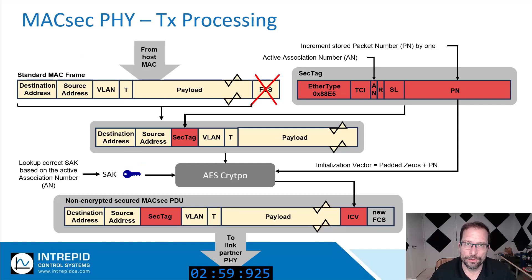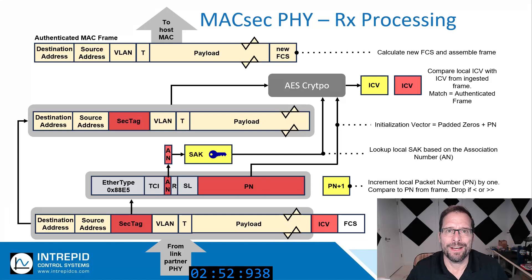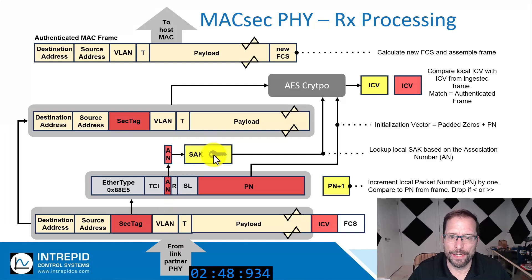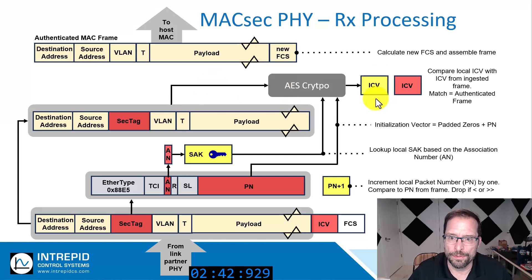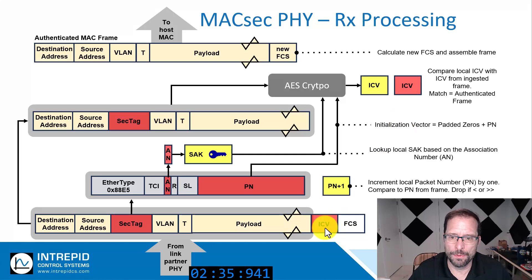Also, using ephemeral keys that get swapped out over time creates a system where not enough data is generated to reverse engineer the key. On the receiving side, the association number is used to look up the correct SAK and the same inputs are put into the AES algorithm, and independently the receiver generates an ICV. If the ICV generated by the receiver is identical to the ICV in the transmission, we know that the frame is authentic.